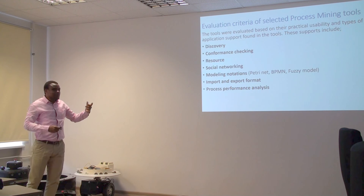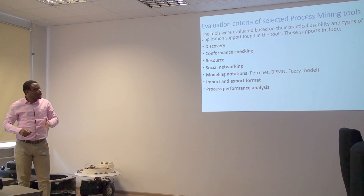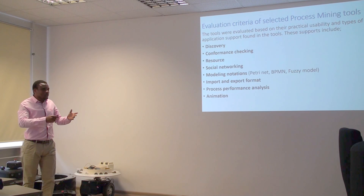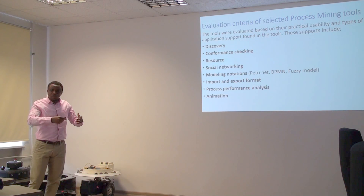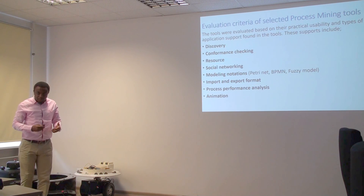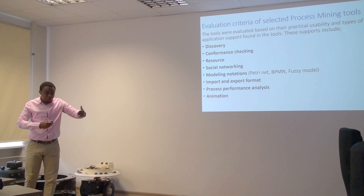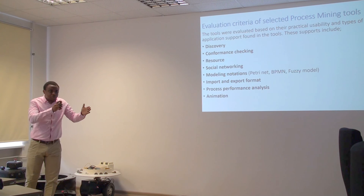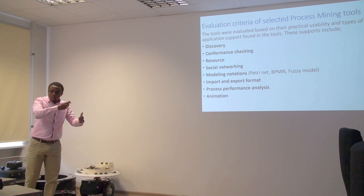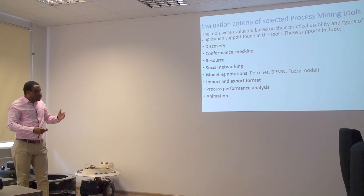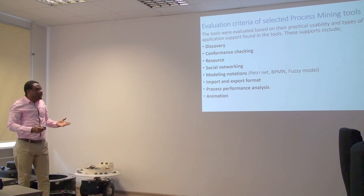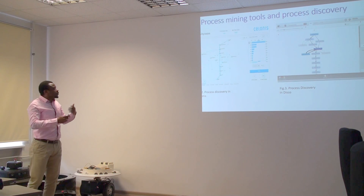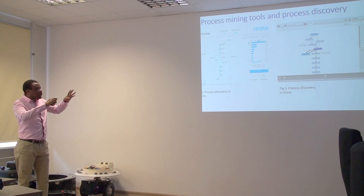Process performance analysis basically measures time in different forms. Animation is another feature — when a process model is discovered, it can be replayed in real time so you can see how the process goes and where bottlenecks occur. When you replay, you see where the bottleneck actually occurred — you see the tokens piling up on a particular process and the delay. It is a quick evaluation of what actually happened before you go further to evaluate it. This is the process model and how the discovered process looks.